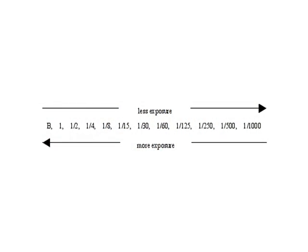On one side you've got a bulb setting, which allows you to keep the shutter open for as long as you depress the shutter button. From there you can set it to say thirty seconds, one second, one half second, one quarter second, one two-fiftieth of a second, one five-hundredth of a second, and most modern cameras go up to about one four-thousandth of a second.